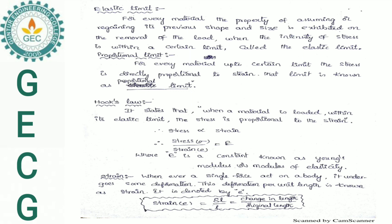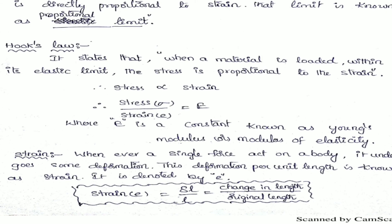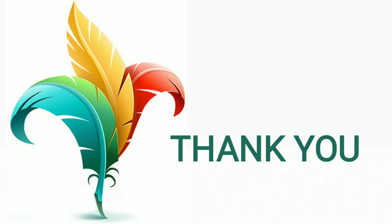Next topic: what is strain? Whenever a single force acts on a body, it undergoes some deformation. This deformation per unit length is known as strain. It is denoted by small e: strain e = δl / l, that means change in length divided by original length. Thank you.